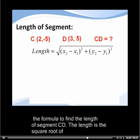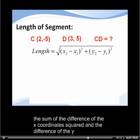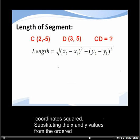The length is equal to the square root of the sum of the difference of the x-coordinate squared and the difference of the y-coordinate squared.